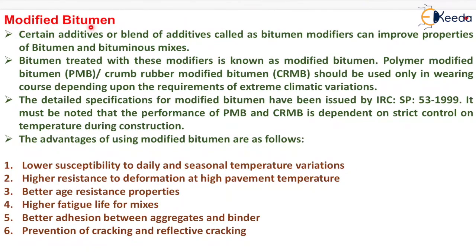Next is modified bitumen. Certain additives or blends of additives called bitumen modifiers can improve properties of bitumen and bituminous mixes. Bitumen treated with these modifiers is known as modified bitumen. Polymer modified bitumen and crumb rubber modified bitumen should be used only in wearing course depending upon the requirements of extreme climatic variations. The detailed specifications for modified bitumen have been issued by Indian Road Congress SP53:1999. It must be noted that the performance of PMB and CRMB is dependent on strict temperature control during construction.